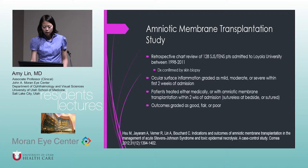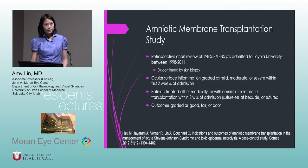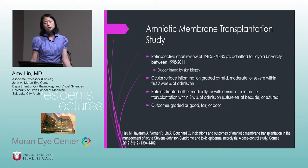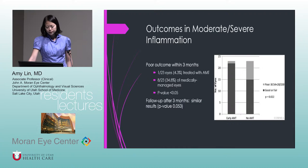I was part of a study at Loyola — a chart review of 128 biopsy-proven Stevens-Johnson patients. We graded their ocular surface as mild, moderate, or severe, and patients were treated either medically or with amniotic membrane. Amniotic membrane has only been used for about the past 10 years, so this was a nice way to compare outcomes before and after it was employed. Patients were graded as good, fair, or poor for outcomes.